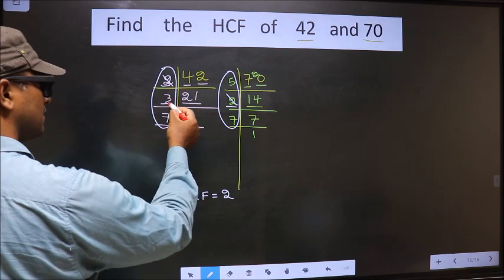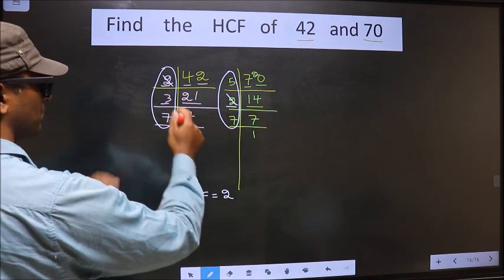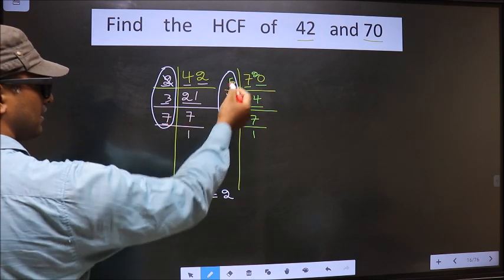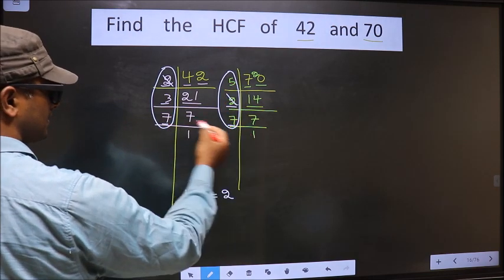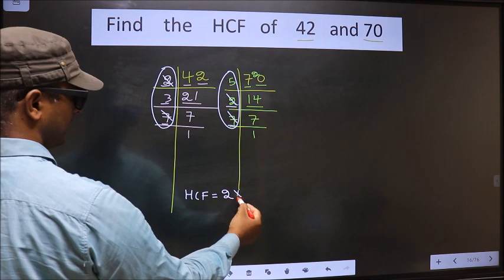Next number is 3. Do we have 3 here? No. Next number is 7. Do we have 7 here? Yes. So, you cut 7 right here.